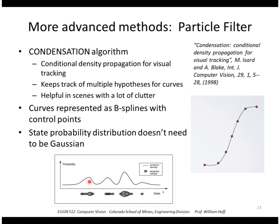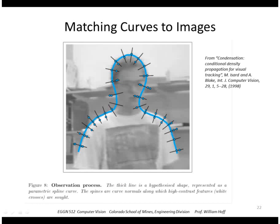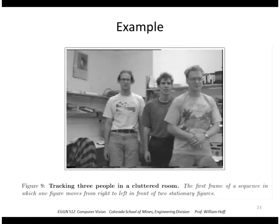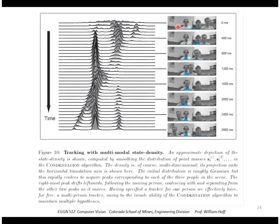In this example we would have three strong hypotheses of where our object was. The algorithm evaluates the goodness of a hypothesized curve against the image by looking perpendicular to the curve, finding high gradient points, and the closeness of those contributes to the score of that curve. Their example was to track people as they move through the image — starting from basically no hypothesis of where the people were, as time goes on the algorithm identifies three people in that image.